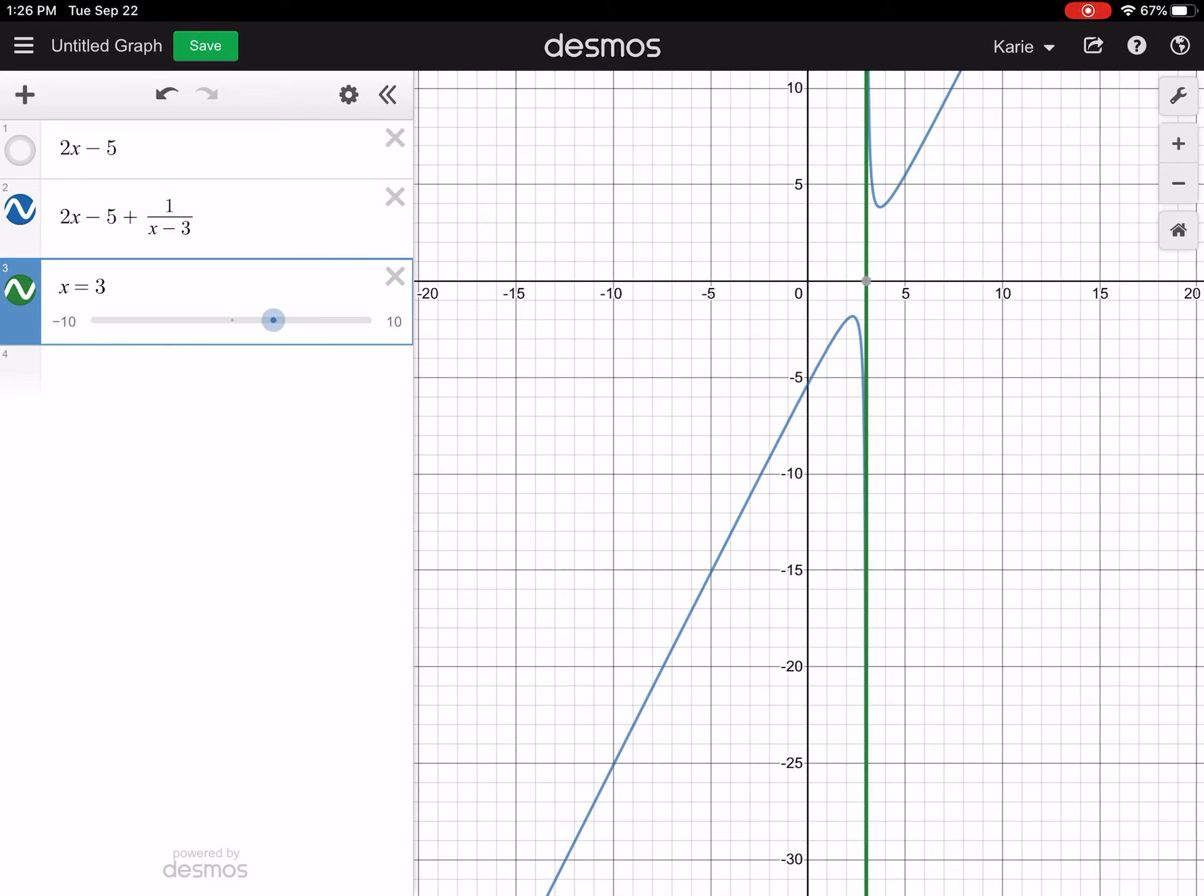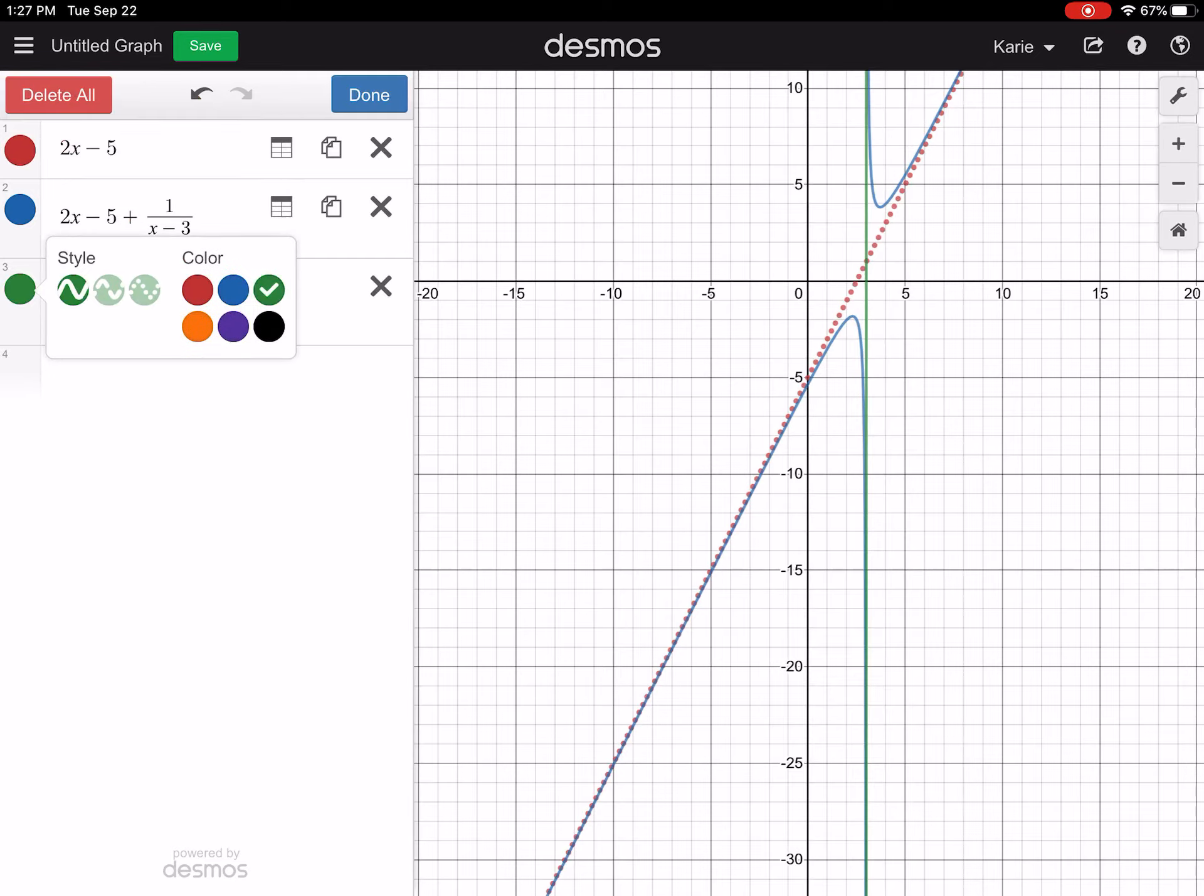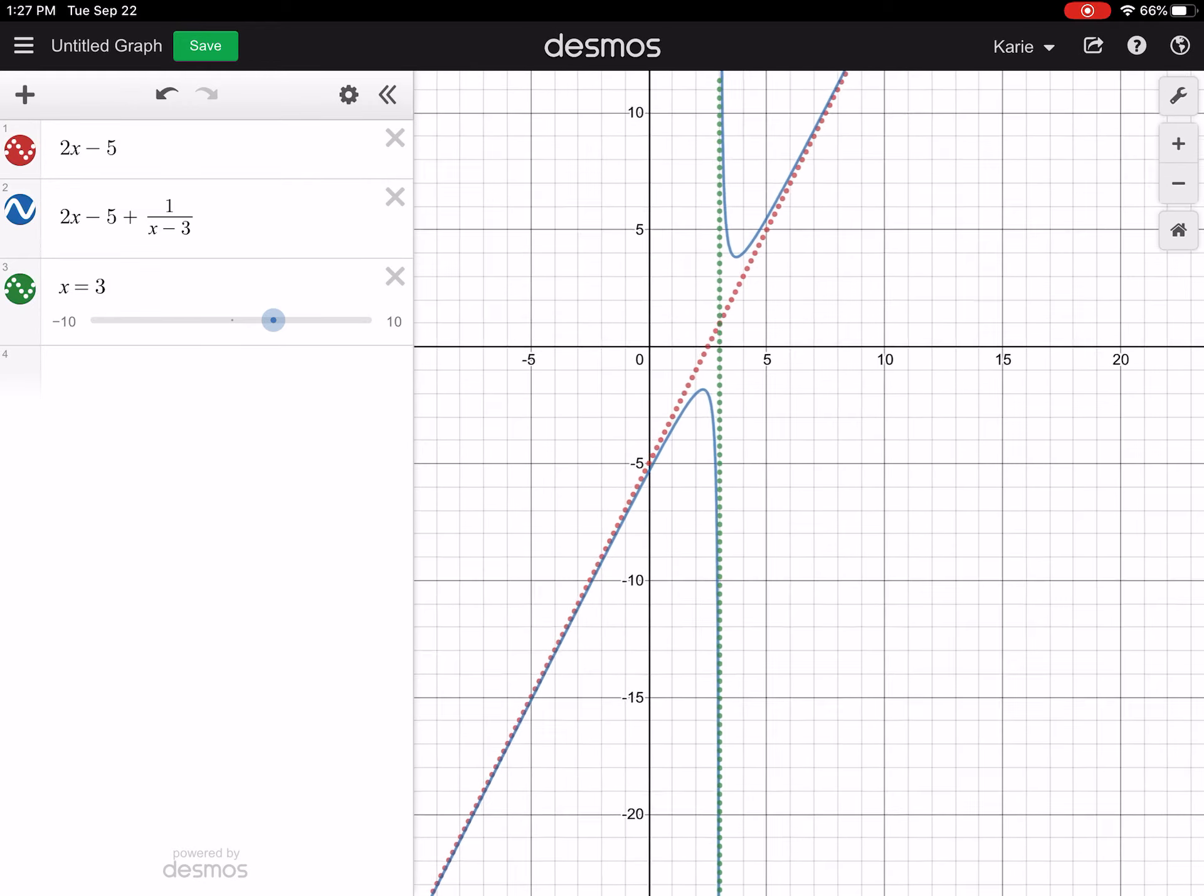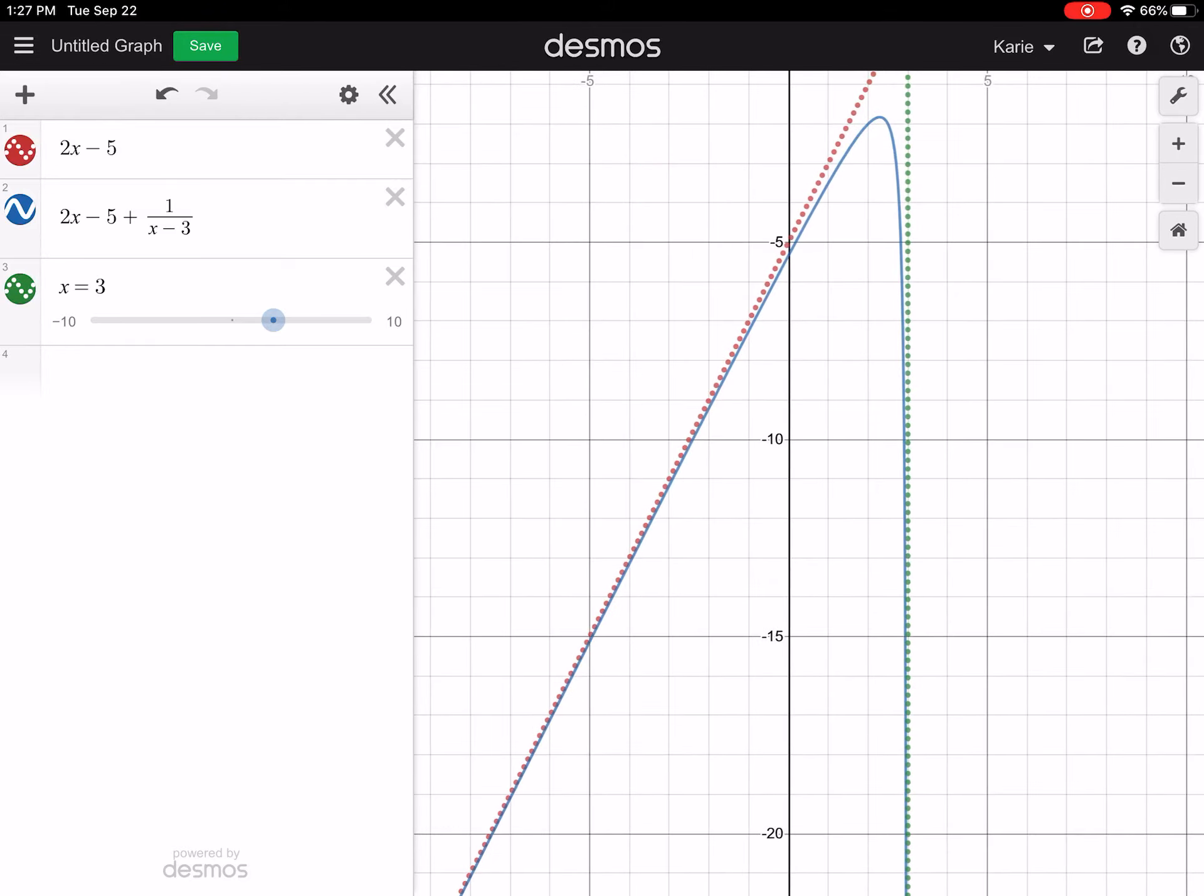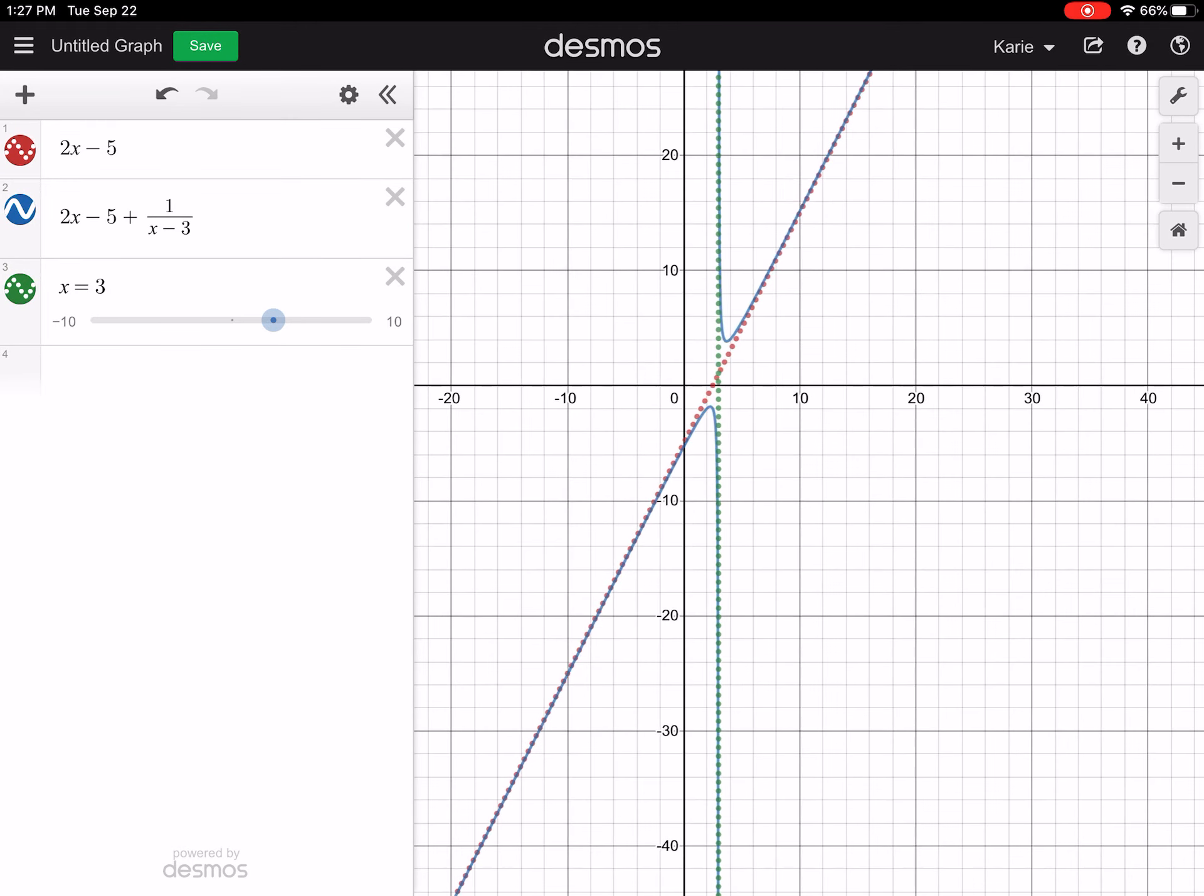Notice I can also type in x equals 3 into my graph here. I can even clean this up. If I hit that little toolbar, I can change that to a dotted line and change this to a dotted line. So now notice what's happening here. I've got the y equals 2x minus 5 is that red dotted line. My new rational function is the blue that's kind of approaching both of those asymptotes. My other asymptote was x equals 3. And you can see how that graph lives there with them inside that.